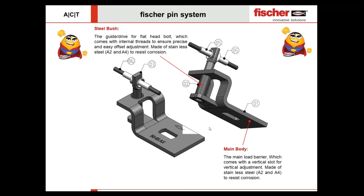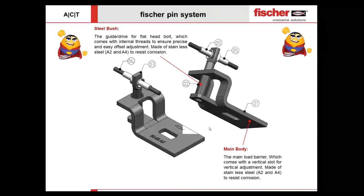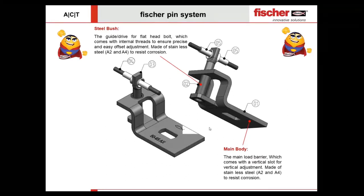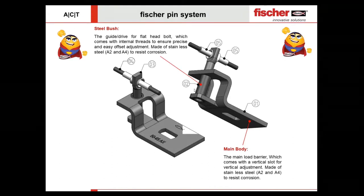Element number two is a steel bush or steel cylindrical piece with internal threads, which acts as a guide for the flat head element. It provides easy adjustment for front and back position. This also comes in both A2 and A4 materials for corrosion resistance.